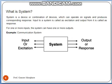Now, what is a system? As you can see in this block diagram, a system can be defined as a combination of devices which can operate on signals and produce some corresponding responses. The input of the system is also called the excitation and the output is called the response. For one or more inputs, a system can have one or more outputs.